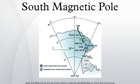In 2015 it lies at 64.28 degrees S, 136.59 degrees E. That point lies outside the Antarctic Circle.